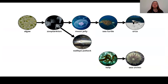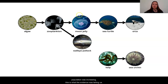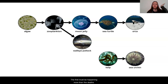In our last lesson, we started to think about how different populations could have affected the moon jelly population. Throughout this unit, we've been collecting evidence about different ways that populations change or stay stable. From the very beginning, we knew that the moon jelly population was increasing, and we realized this has something to do with the amount of births and deaths in the moon jelly population.